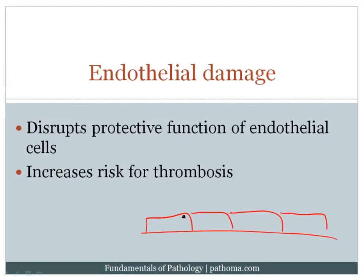Another way is that the endothelium produces molecules like prostacyclin (prostaglandin I2), which blocks platelet aggregation. It's sort of the opposite of thromboxane A2. The platelets produce thromboxane A2, but the endothelium produces prostaglandin I2, and these are opposite of one another. This is one way by which the endothelium can block platelet aggregation and hence block the activation of the coagulation cascade and thrombosis.